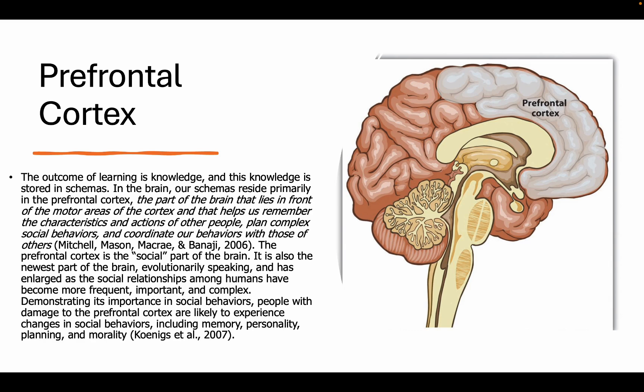Let's talk about some anatomy and physiology with the prefrontal cortex and learning. The outcome of learning is knowledge, and this knowledge is stored in schemas. Schemas are a collection of related concepts, and in the brain, our schemas reside primarily in the prefrontal cortex area within the frontal lobe. The prefrontal cortex is hugely important for decision-making, problem-solving, and judgment, and is the part of the brain that helps us remember the characteristics and actions of other people, plan complex social behaviors, and coordinate our behaviors with those of others.